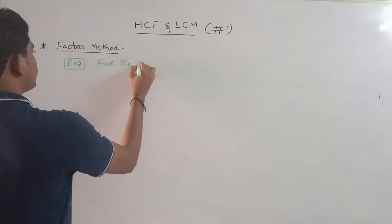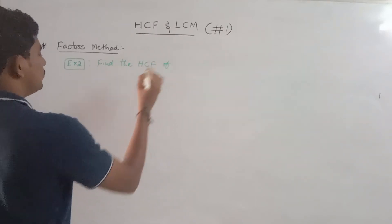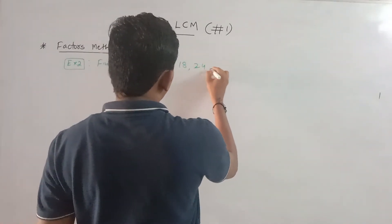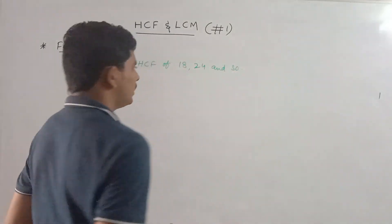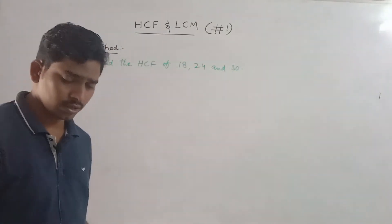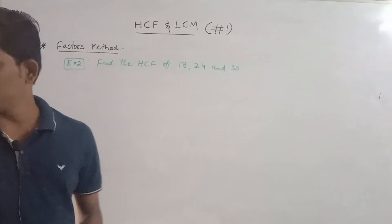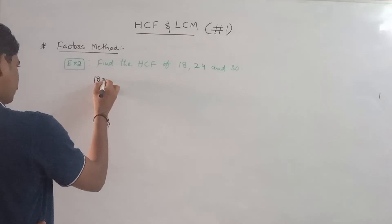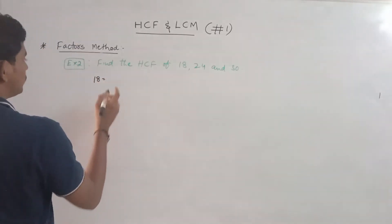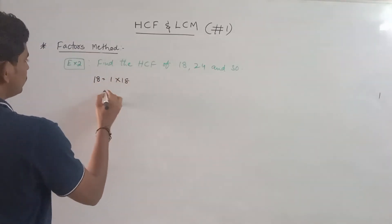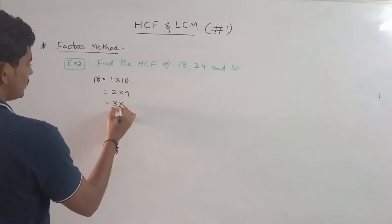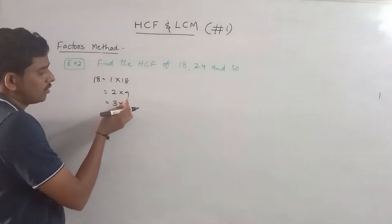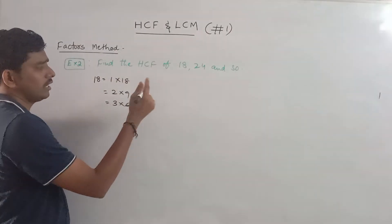Now find the HCF of 18, 24, and 30. First, the factors of 18: 1, 2, 3, 6, 9, 18.